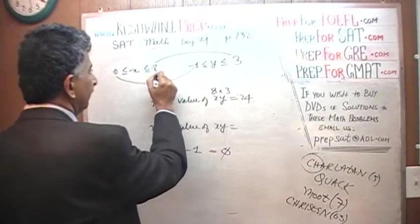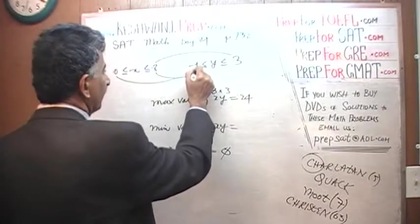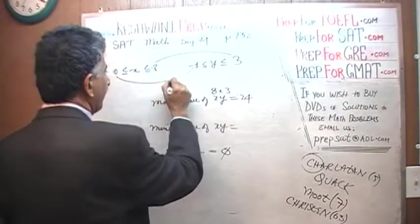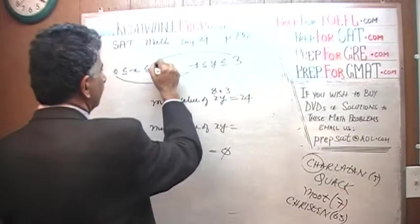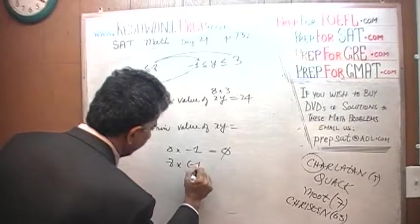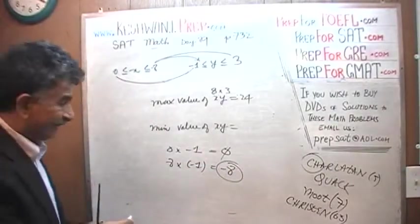So that's one possibility, another possibility is we got 8 times 3, it could have been 8 times negative 1. Let's do the 8 on the top. We have this part, let's do 8 on the top. 8 times negative 1 is another possibility. 8 times negative 1 will give us negative 8. So negative 8 is less than 0, which means this is already out of the game.